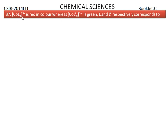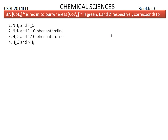Hexaaqua cobalt(3+) is red in color, whereas hexaligand L-prime cobalt(3+) is green. L and L-prime respectively correspond to the options shown here — combinations of amine, aqua, and 1,10-phenanthroline.